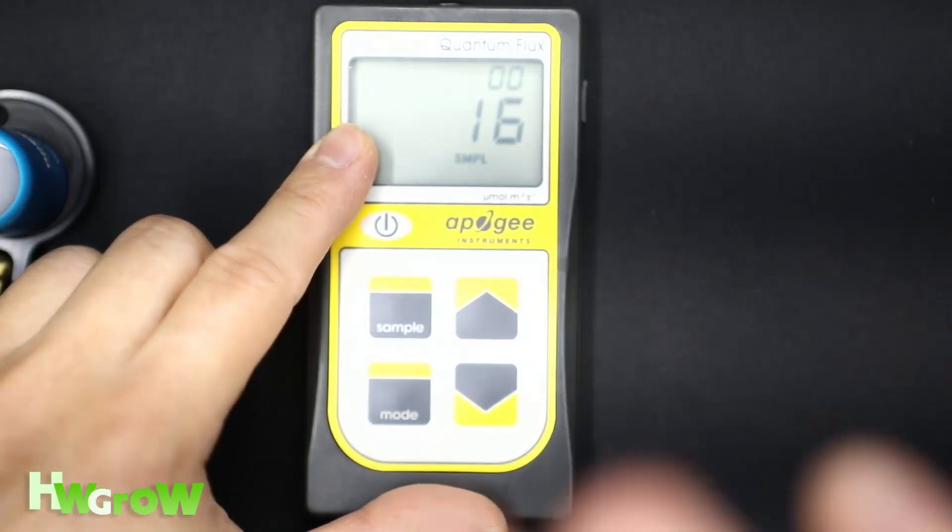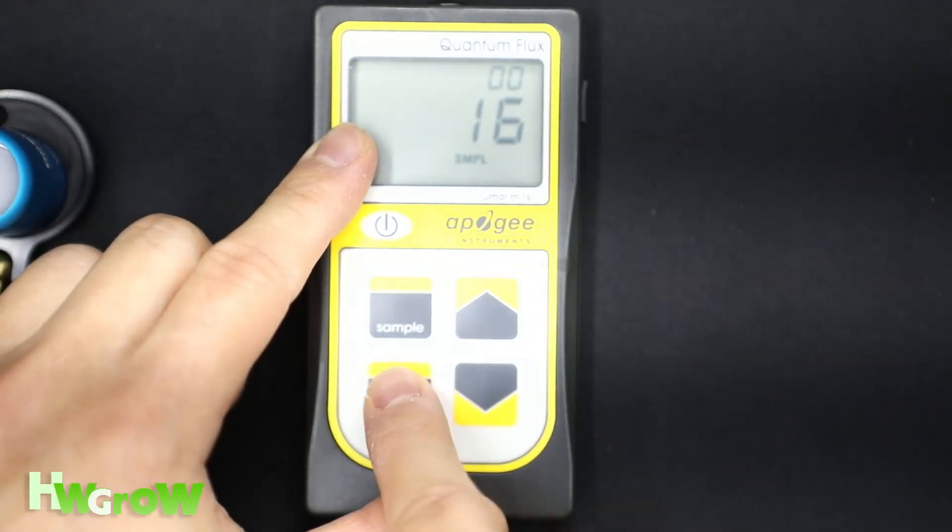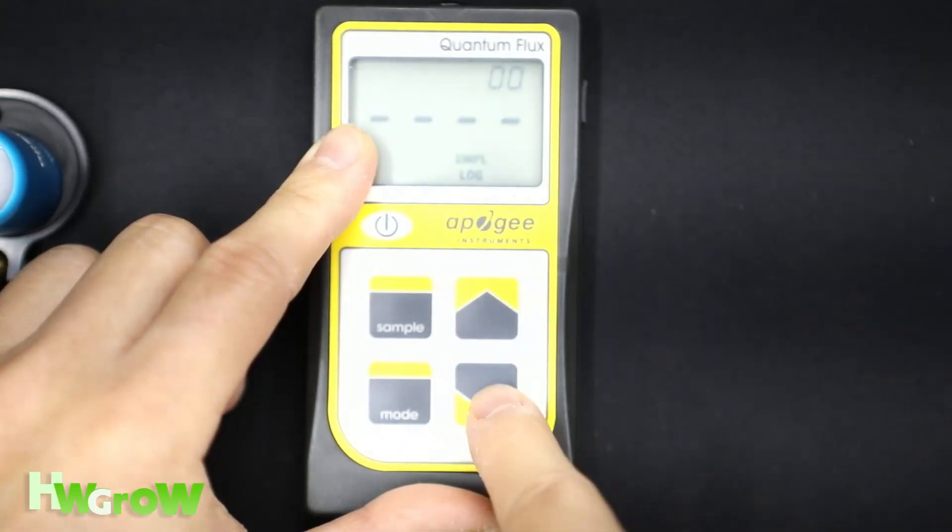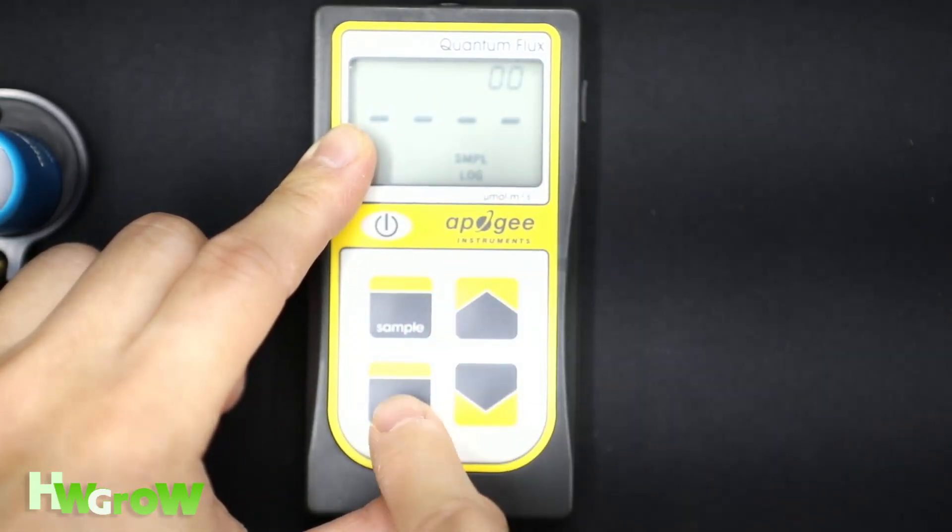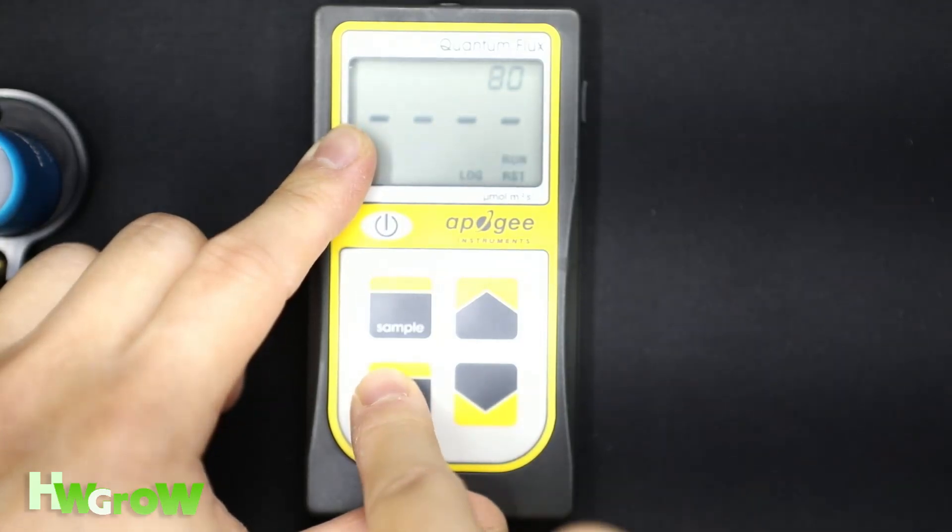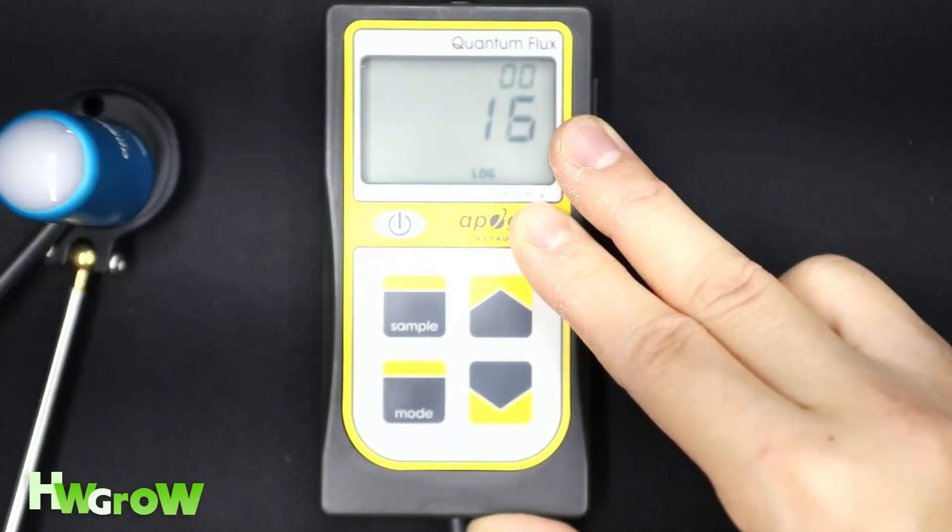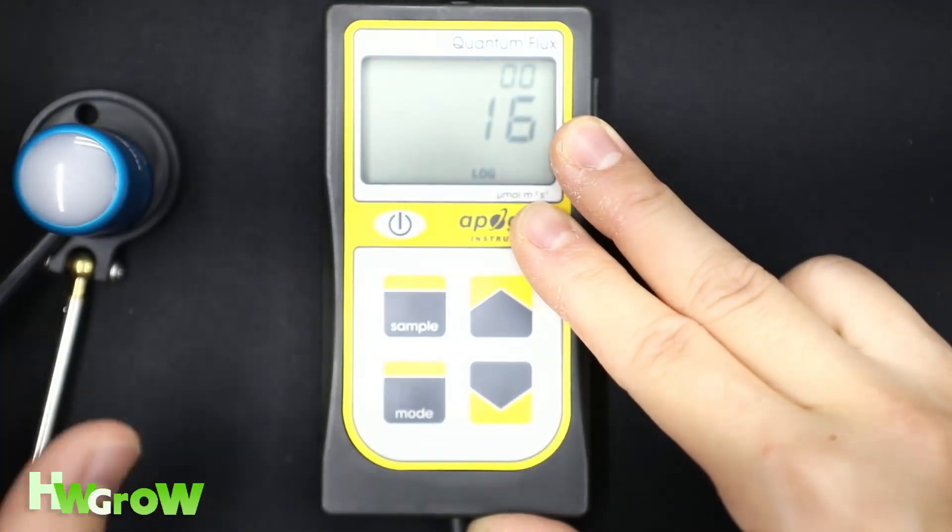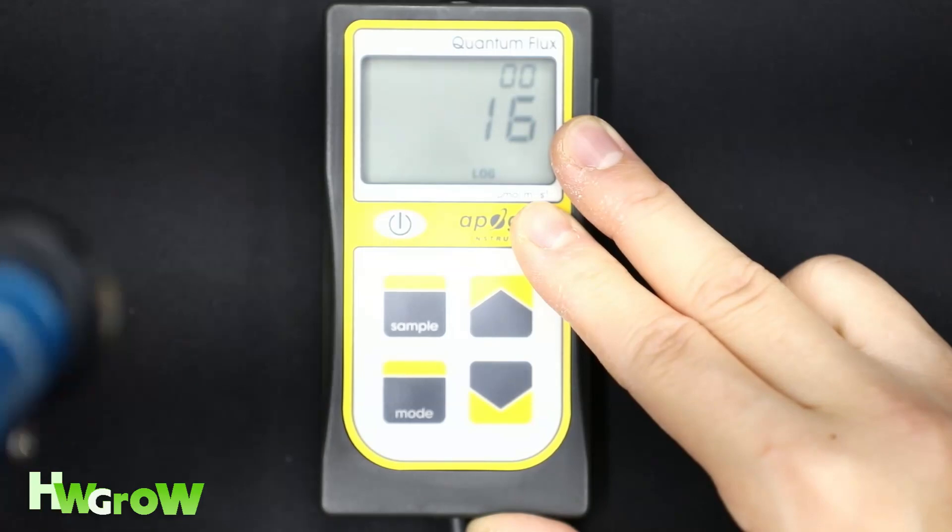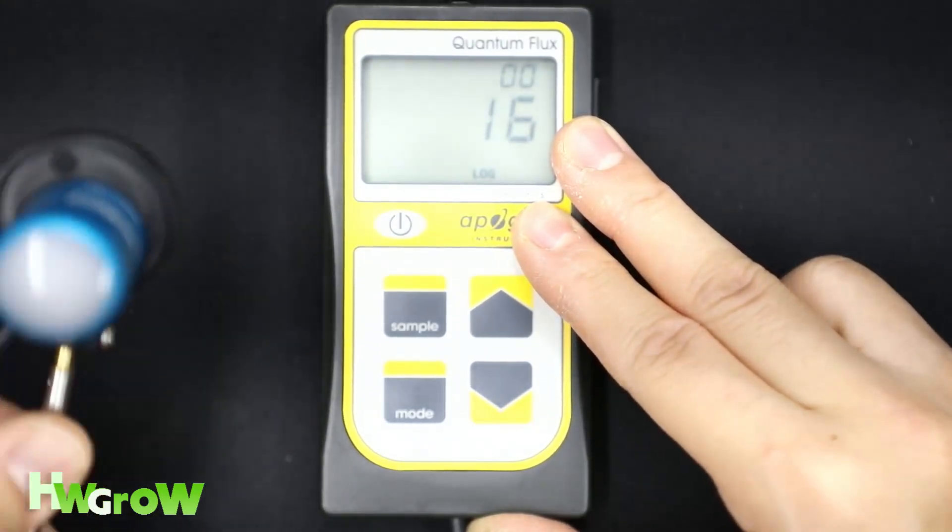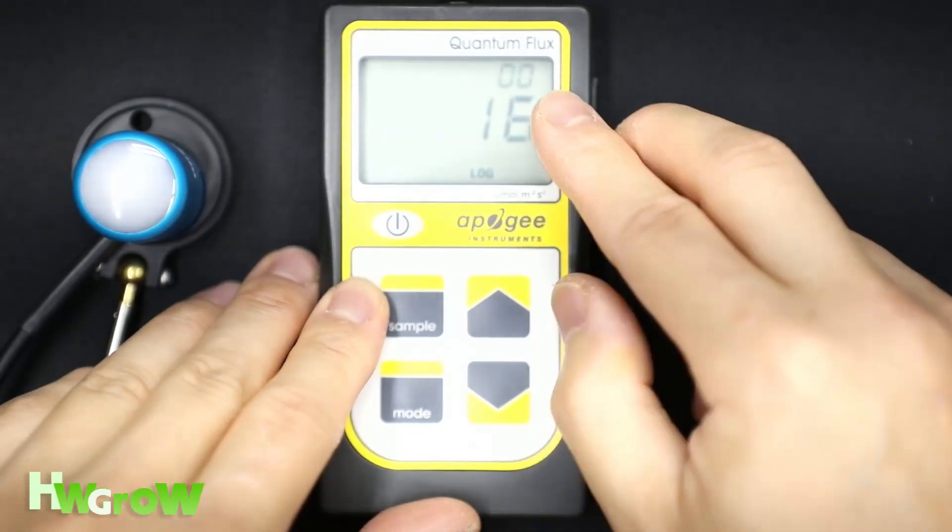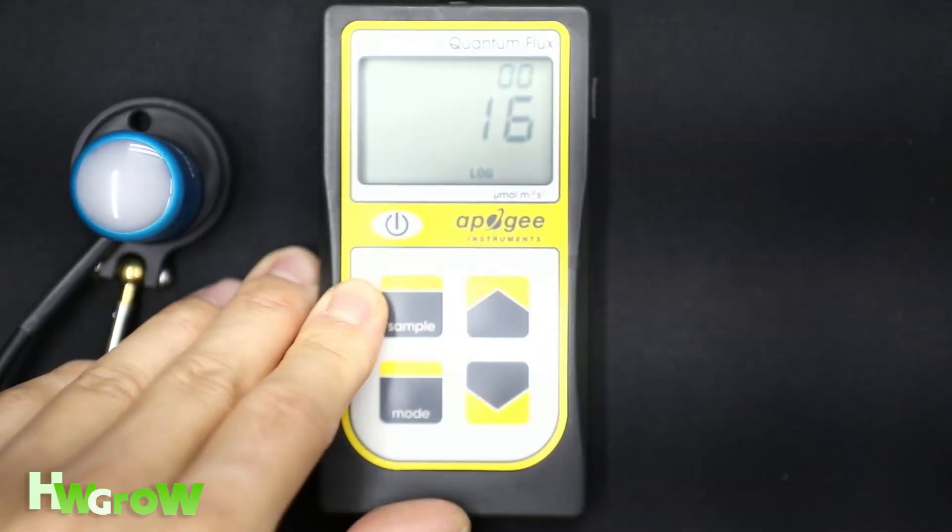Now log mode, you access again by pressing mode. Then you press down so that log is blinking, and then you press mode twice. So this is an automatic mode. Every 30 seconds, this is going to take a reading, but it's not recording that reading. It's averaging 60 separate readings.